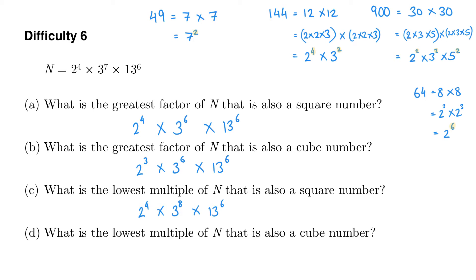Finally, the lowest multiple of n that is also a cube number. For a cube number we want indices that are multiples of 3, and this time we don't want any of these indices to be less than the indices we've got in n. So we need 2 to the power of 6 - the lowest multiple of 3 that is at least 4 - multiplied by 3 to the power of 9, since 9 is the lowest multiple of 3 that is at least 7, multiplied by 13 to the power of 6, since 6 is the lowest multiple of 3 that is at least 6.